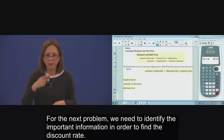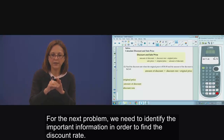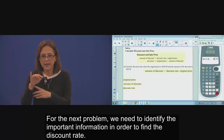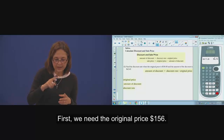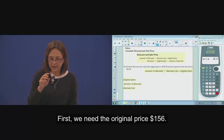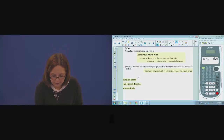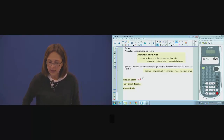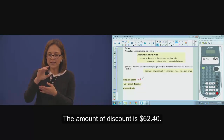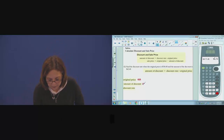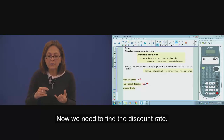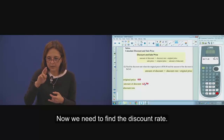For the next problem, we have to identify the important information we need to find the discount rate. First, we need the original price, $156, and the amount of discount, $62.40. Now we have to find the discount rate.